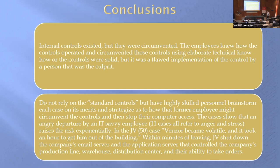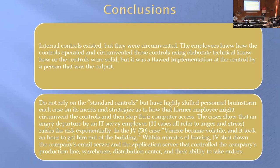Here are my conclusions after reading 80 cases. Number one: the internal controls existed but they were circumvented. Why they could be circumvented was that the person circumventing the controls was often the same person that instituted the controls — they knew how to get around their own controls. Don't rely on the standard controls. Instead, have a group brainstorm each case on its merits: so-and-so is leaving — how clever are they, and how angry are they? The angrier they are, the more we have to think about exactly what they could do and try to put something in place to stop it.